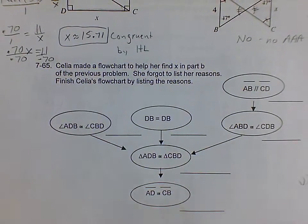All right, so question 65. Celia made a flowchart to help her find X in part B of the previous problem. She forgot to list her reasons. Finish Celia's flowchart by listing the reasons.